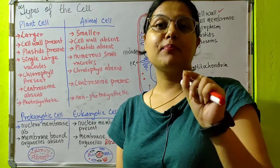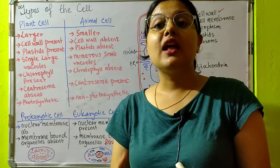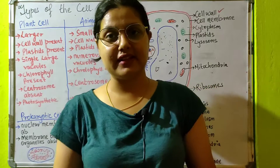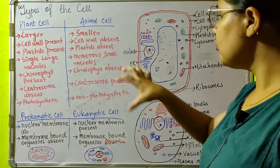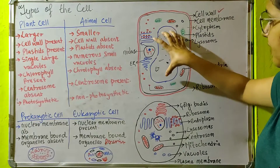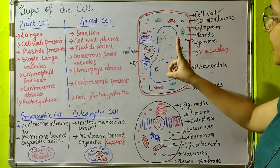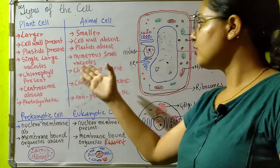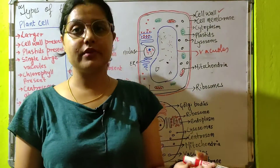Green color plastids are also known as chloroplasts, and chloroplasts contain a pigment known as chlorophyll. Chlorophyll is concentrated mostly on the leaves of the plant, which is why plant leaves appear green in color. Also, plant cells have a single large vacuole, whereas animal cells have numerous small vacuoles. Chlorophyll is present in plant cell and absent in animal cell because plastids are not present in animal cells.